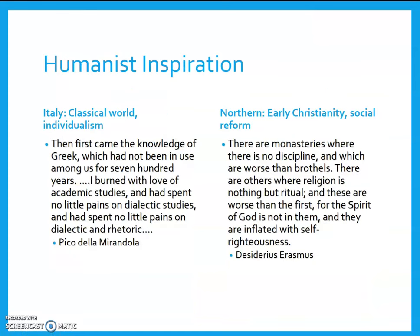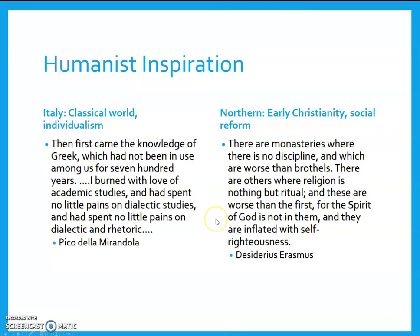In terms of humanism, which was an ideology across both parts of the Renaissance: in Italy, they're focused almost entirely on the classical world and especially on the individual. You can see that in Pico della Mirandola's text, where he talks about how he was introduced to Greek learning and how much he loved classical literature. Whereas in the North, they still borrow from the classical world but also bring in ideas from early Christianity, doing so with a bent of social reform — seeing problems in society and how to fix them, as you can see in Erasmus evaluating problems in monasteries.